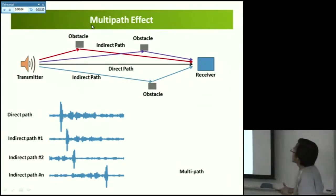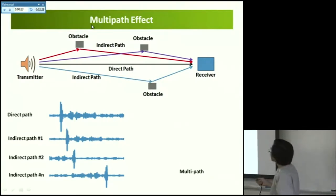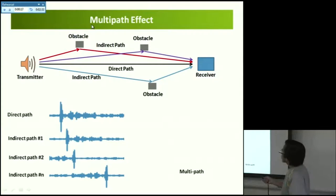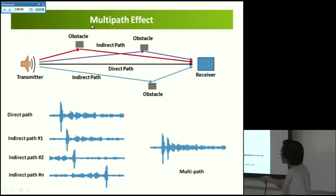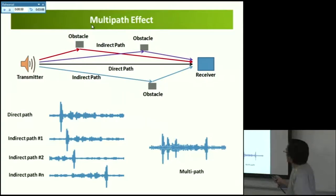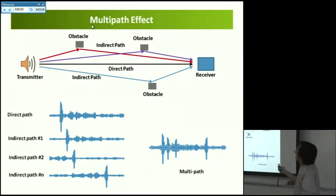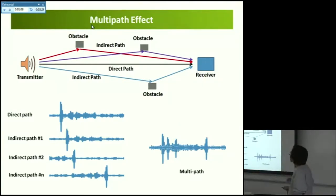Multi-path effect is a phenomenon that we observe when sound interacts with an obstacle. If there is no obstacle, the sound will propagate from the transmitter to the receiver directly. But if there are many obstacles, it is possible to have a direct path and also some reflections or diffractions, so all possible paths will mix together. As a result, in a multi-path environment, we observe this kind of cross-correlation wave with many peaks.